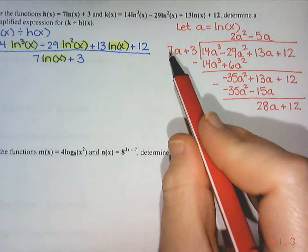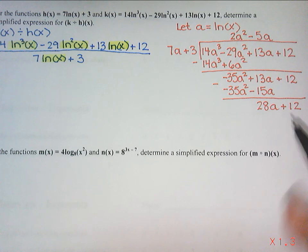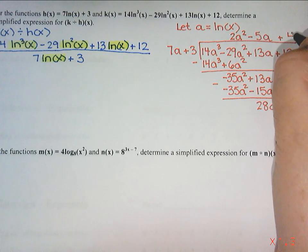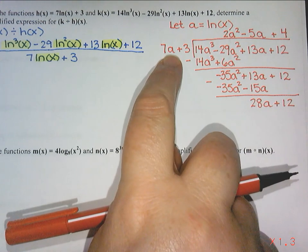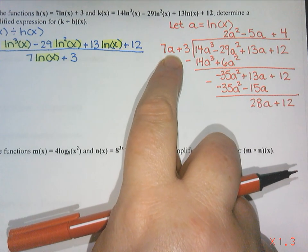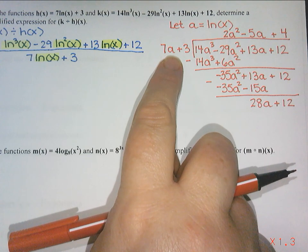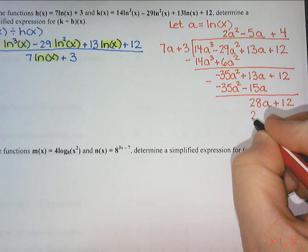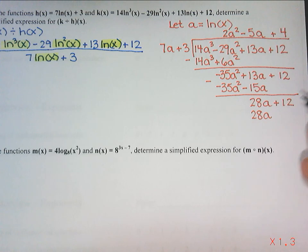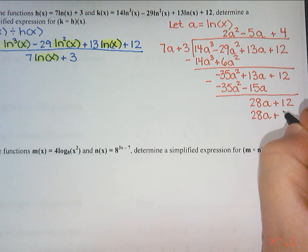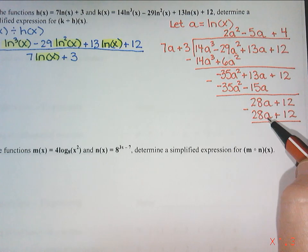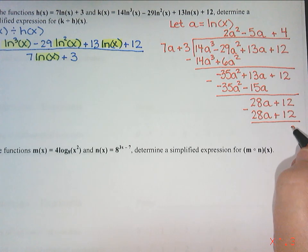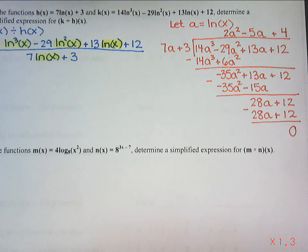Alright, last one. How do we turn a 7a into a 28a? We multiply by 4. How do I know this is the last one? Because this is just an a and this is an a. So I know that after this there won't be another one because I won't have any a's left. So I'm going to get 4 times 7 is 28a. 4 times 3 is 12. When I subtract, 28 take away 28 is 0. 12 take away 12 is 0. So we have a remainder of 0.